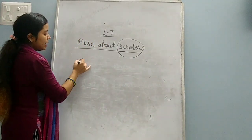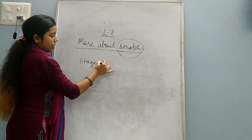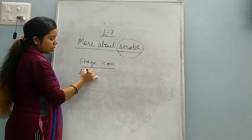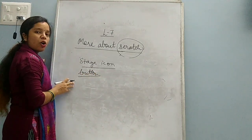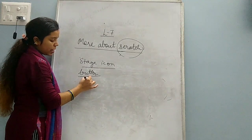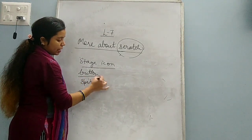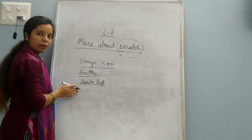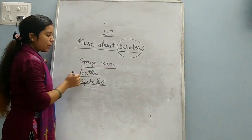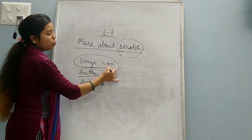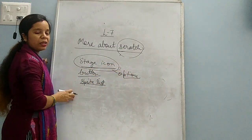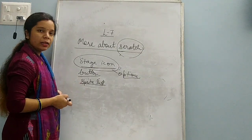Next one is stage icon. What is this stage icon? This stage icon is also simply a button which is present near the sprite list. The sprite list tells the list of the sprites which we have used. Using this stage icon button we can get many options related to stage.